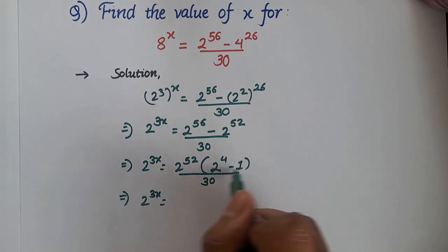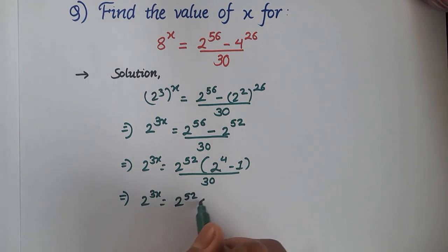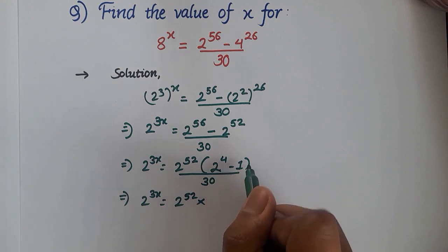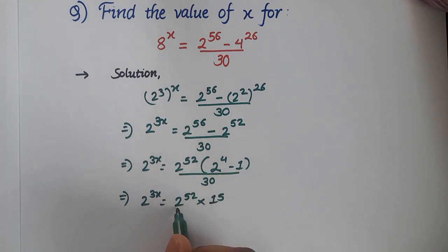Now let us try to solve this. Then 2^4 - 1 will give us a value of 15. So 15 over 30. 15 times 2 is 30.